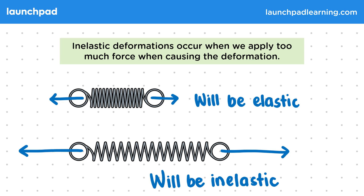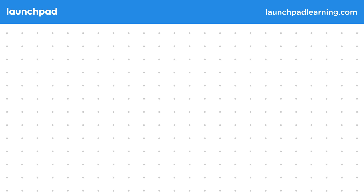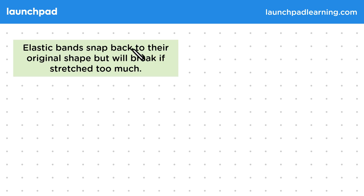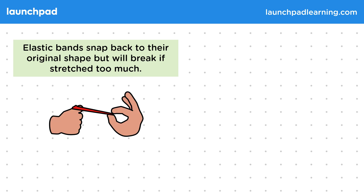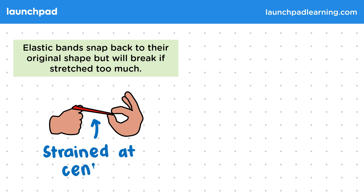So what are some examples of elastic and inelastic deformations? Elastic bands snap back to their original shape but will break if stretched too much. So most elastic band deformations are elastic as they will snap back to their original shape and they may even have some kinetic energy. A band will break when too much force is applied and it thins out as it's too weak to hold together at the centre where it's strained.